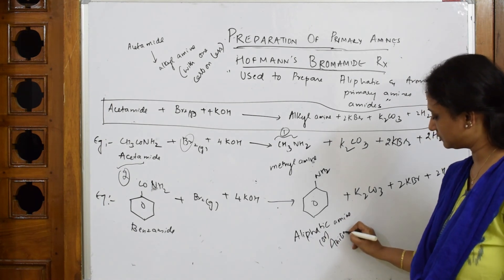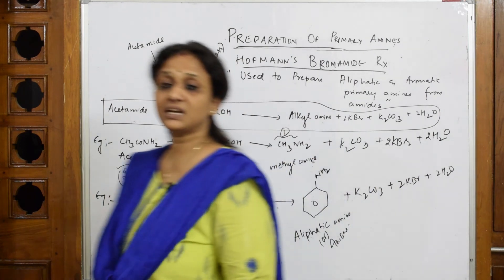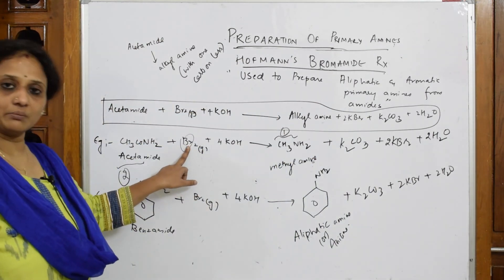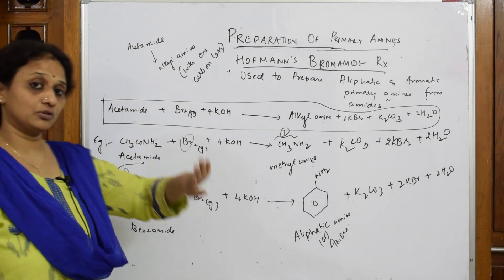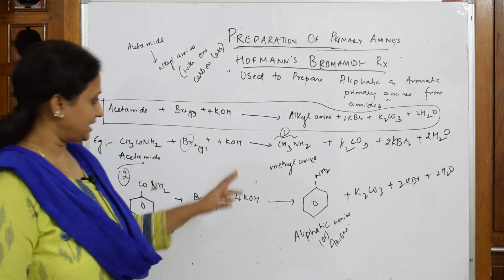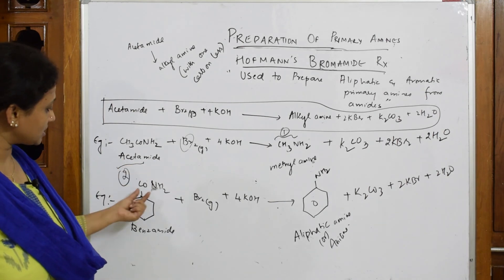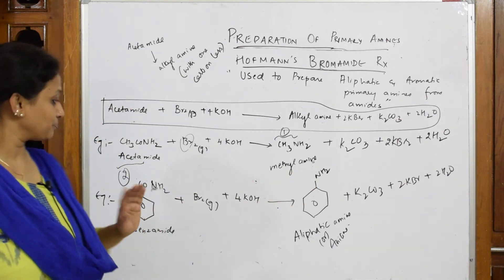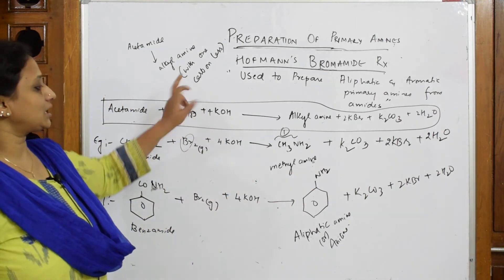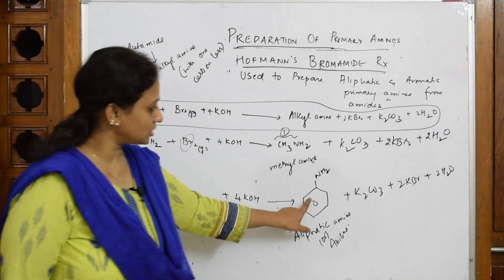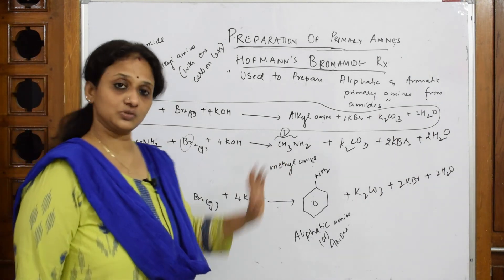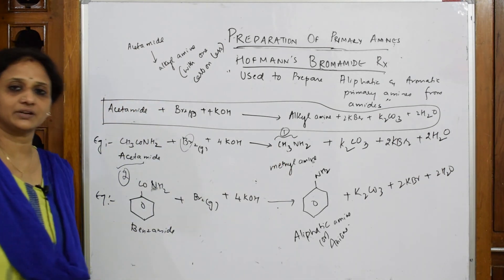Most important thing is picking up bromine gas because it's Bromamide reaction, and picking 4 KOH, 4 moles of KOH. Otherwise you will end up writing some product which has the same number of carbon atoms, wrong. The product will have one carbon less. Here CO benzene ring, here no CO. This is your Hoffmann's Bromamide reaction.